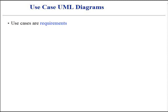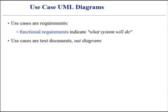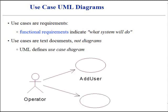Use cases are requirements — primarily they are functional requirements that indicate what the system will do. Use cases are text documents, not diagrams, and use case modeling is primarily an act of writing text, not drawing. However, the UML defines a use case diagram to illustrate the names of use cases and actors and their relationships.